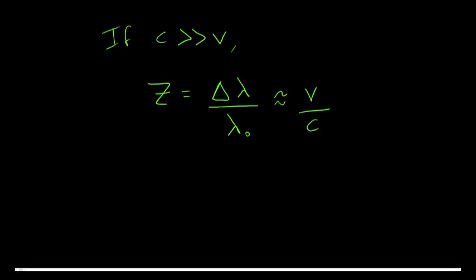If you have previously studied the Doppler effect, you'll be aware that for electromagnetic radiation, as long as C, the speed of light, is much, much greater than V, the recessional speed of the moving galaxy, the redshift can be approximated with Z. The redshift is equal to delta lambda divided by lambda zero, which is approximately equal to V divided by C.